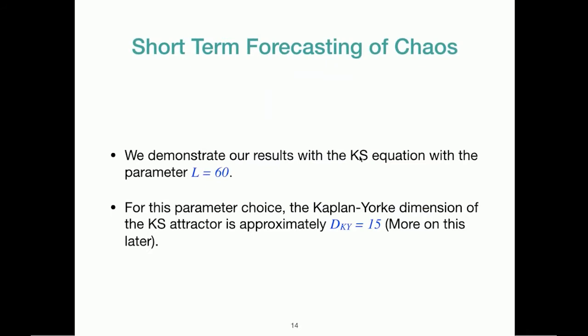So for short-term forecasting of chaos, we are going to demonstrate our results with the KS system with a parameter L equals 60. And for this parameter choice, the Kaplan-York dimension of the KS attractor is approximately 15. I just want to point out that this is a 15-dimensional attractor at this point.